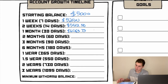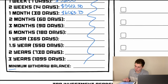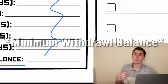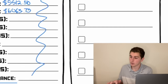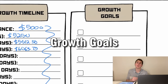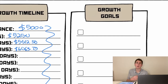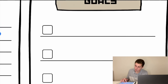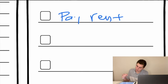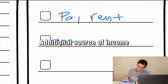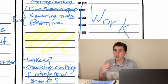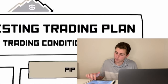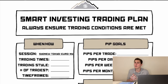Part of your trading plan should also include a minimum withdrawal balance — whatever balance you're comfortable leaving in your account versus when you're okay pulling money out is totally up to you. Growth goals are also super helpful generally as a person: saving for a car, paying rent, another source of income, saving for retirement — these are all good examples. That covers the psychological planning portion; now we move into the actual trading plan itself.